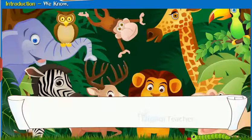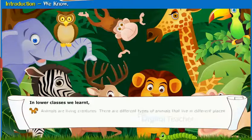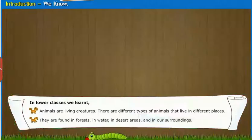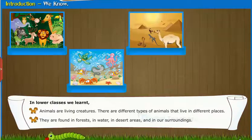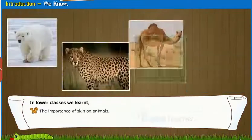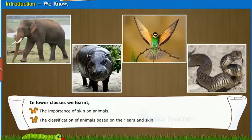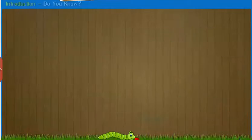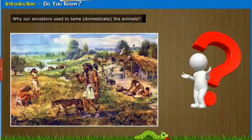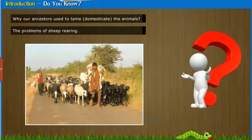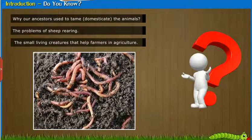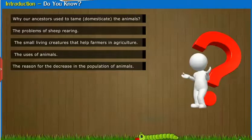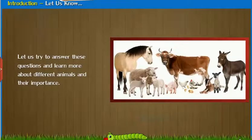In lower classes, we learned animals are living creatures. There are different types of animals that live in different places — in forests, in water, desert areas, and in our surroundings. We studied the importance of skin on animals, the classification of animals based on their features, the difference between oviparous and viviparous animals, and the problems of sheep rearing.